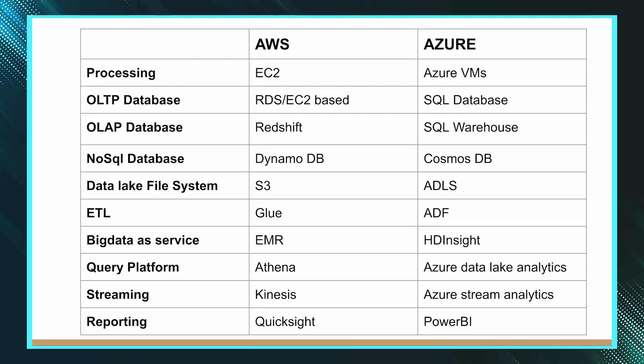In this video, I'll show you the different data engineering services in AWS and Azure. If you are looking for VMs in AWS, you can choose EC2, and in Azure you will get the same thing in Azure VMs service. If you're looking for OLTP databases — databases for any front-end application which requires high transaction capability — then you can choose AWS RDS, which provides different databases like MySQL, SQL Server, Oracle, Postgres, and MariaDB.